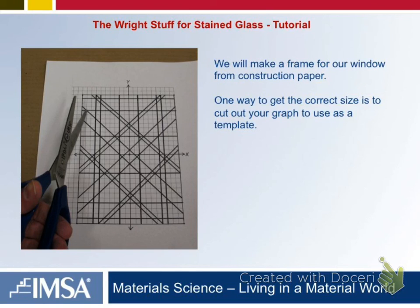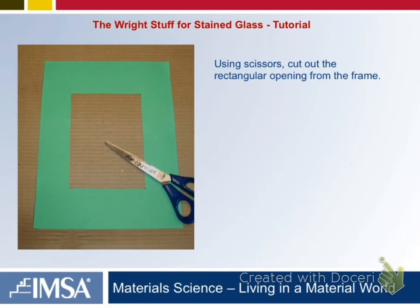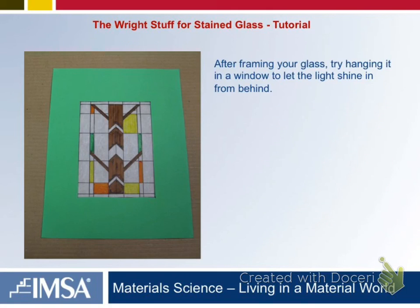We'll be making a frame — I'll get you some construction paper. The easiest way to make the frame is to cut out your original grid so that you have the correct size, trace it onto the construction paper, and then cut it out. Then we'll be putting the stained glass behind it.